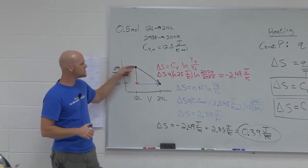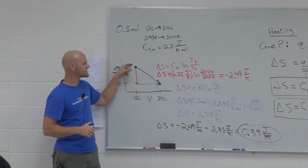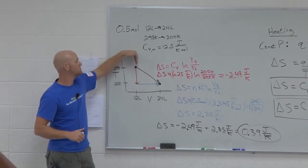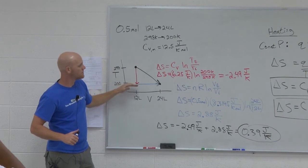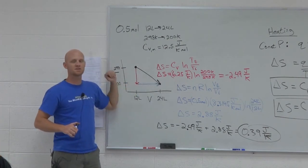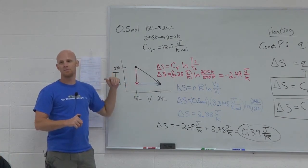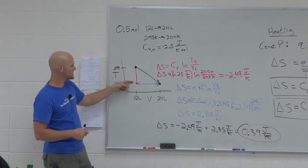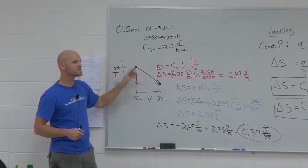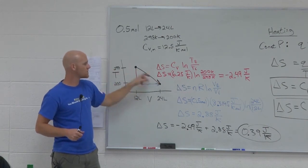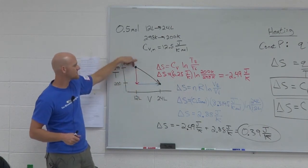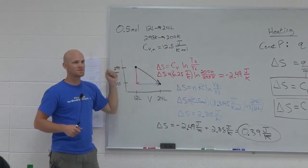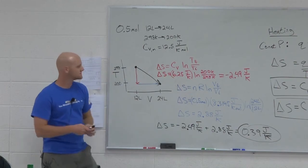Again, notice we couldn't do this directly in one step. But I can break it down into a fictitious pathway. Because delta S is a state function, I know how to calculate each individual step. Add the two together and it should be the same as the overall process, because we're starting from the same initial state and ending at the same final state.